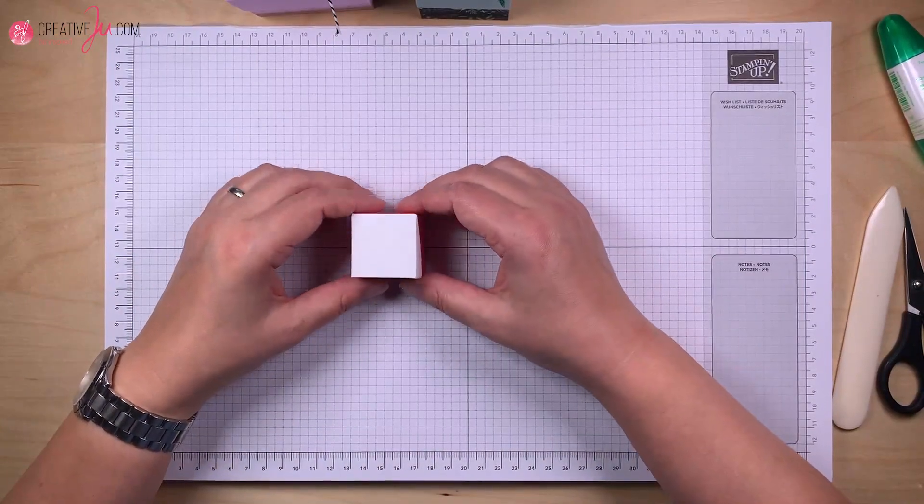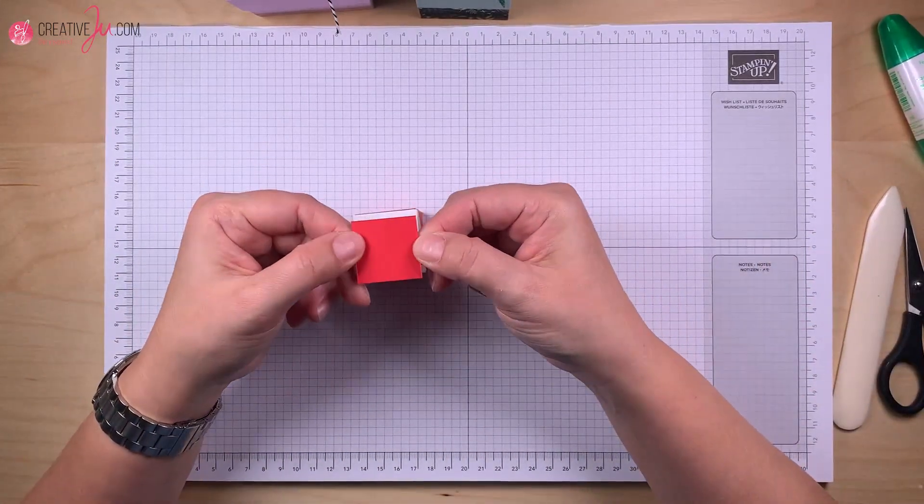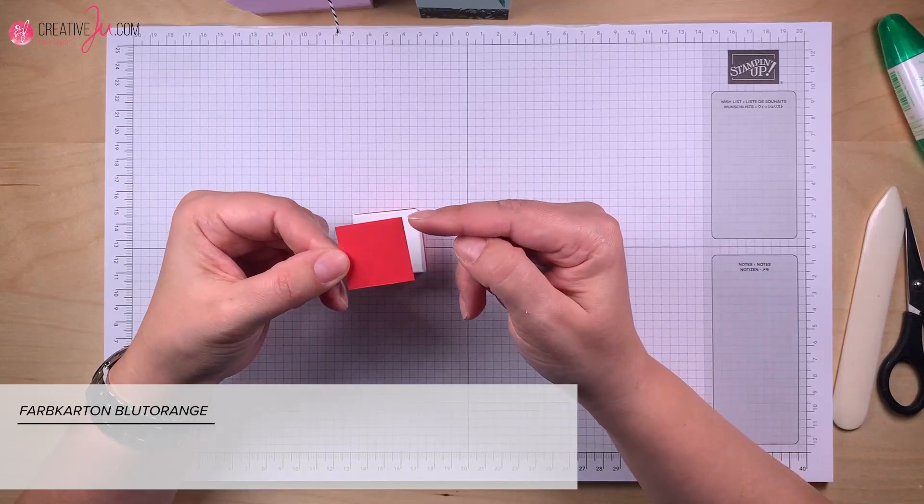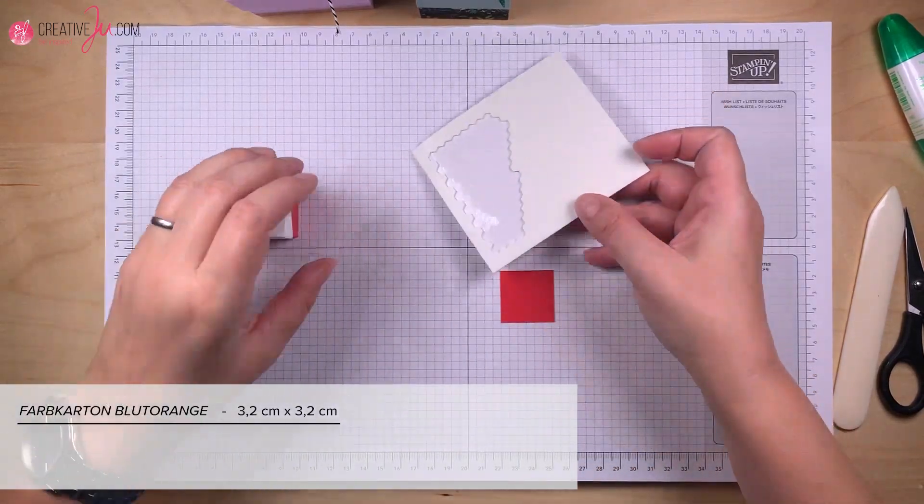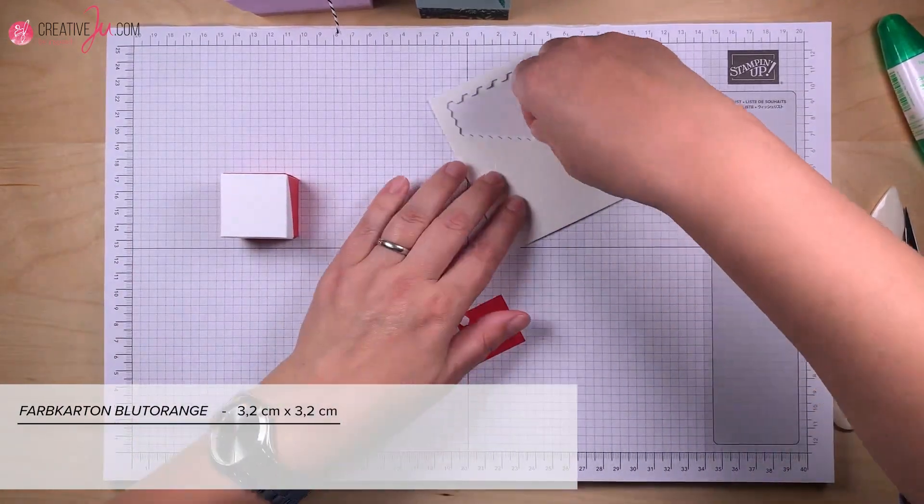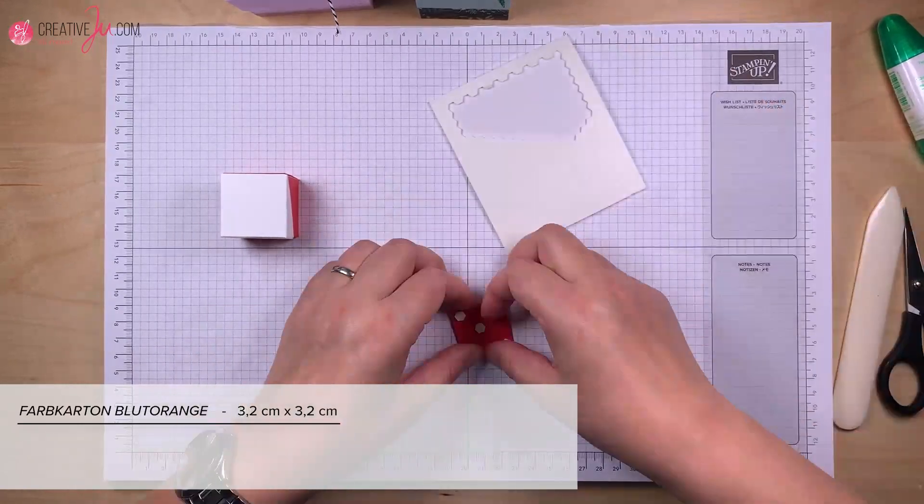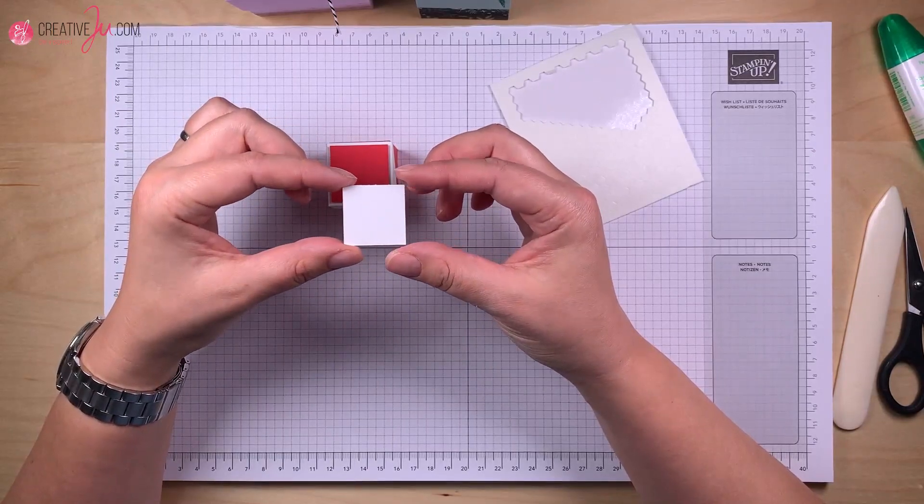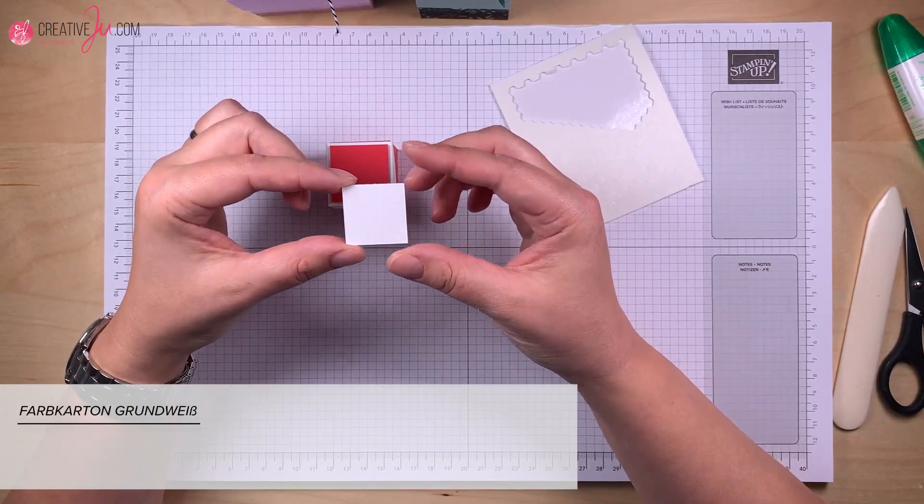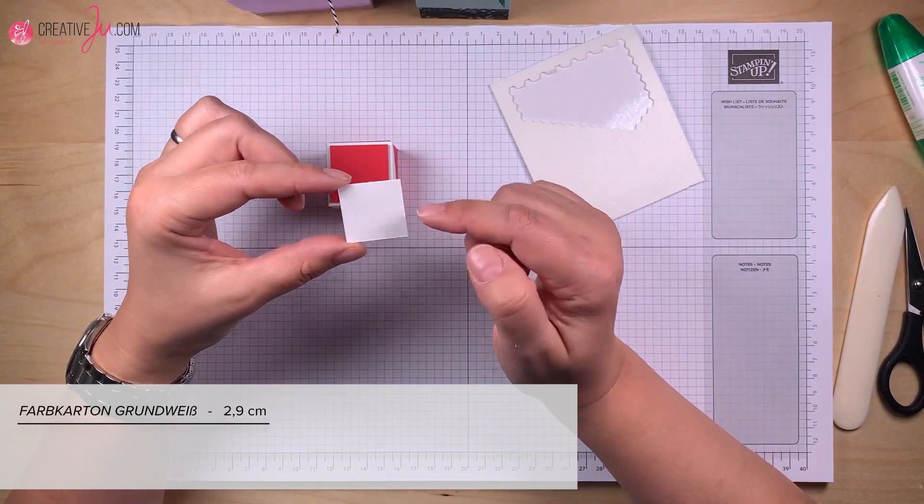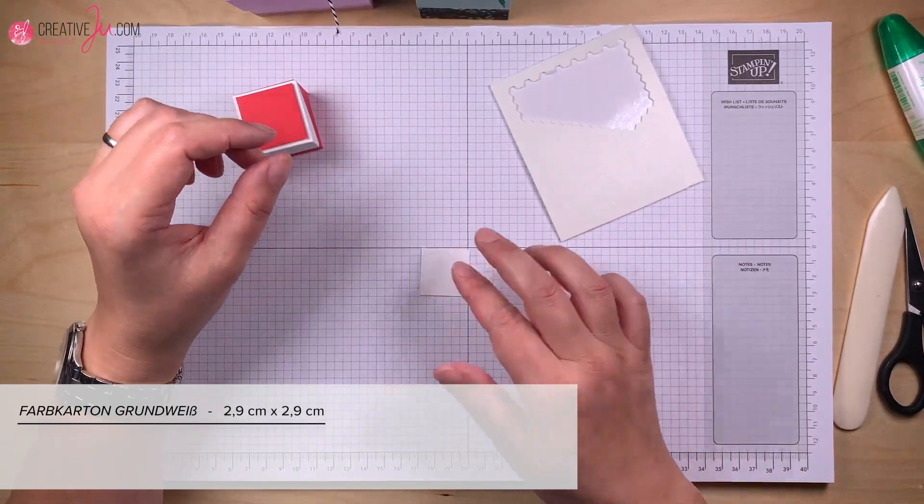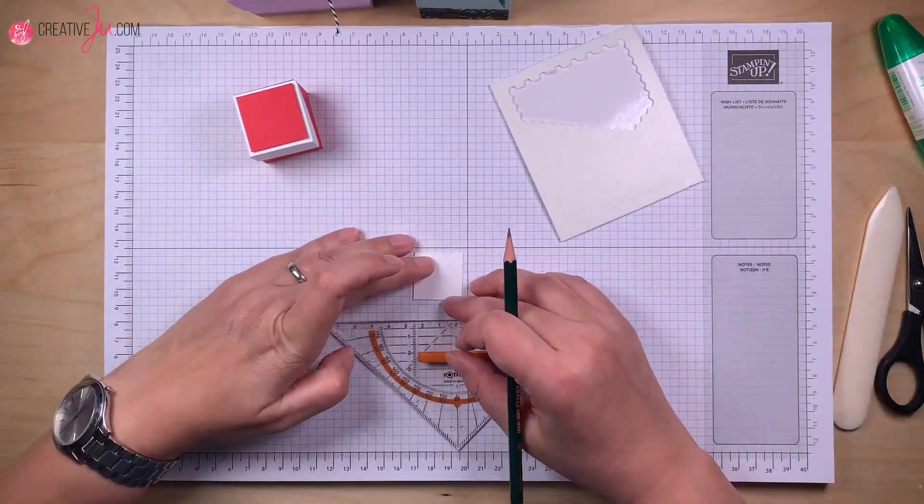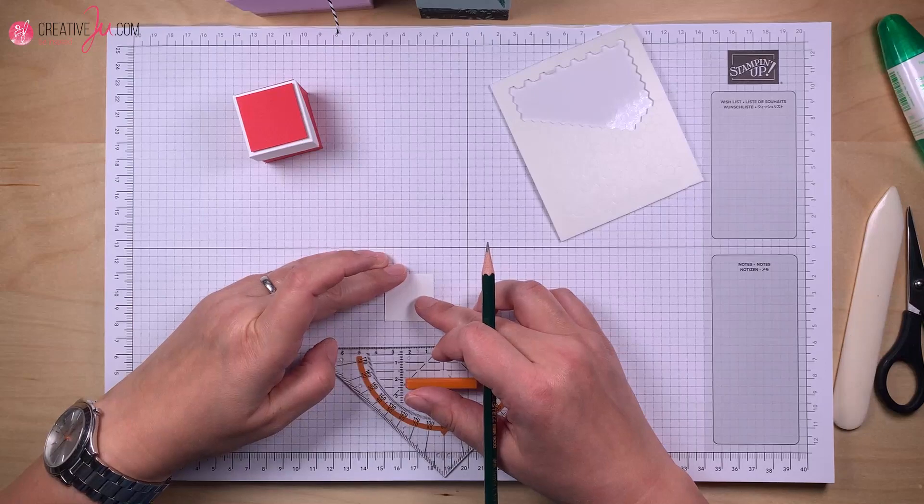Dann kommen wir jetzt zu unserer Deko. Dafür brauchen wir ein Stück Farbkarton in Blutorange wieder und zwar mit dem Maß 3,2 x 3,2. Das können wir aber auch schon ankleben und zwar mit der Menschenloß, das ist dann einfach schöner. Für die Deko brauchen wir noch eine zusätzliche Mattung hier mit dem Farbkarton in Grundweiß mit dem Maß 2,9 x 2,9 cm. Wir kleben das noch nicht an, da kommt jetzt unser Kölner Herzschlag. Und zwar mache ich das jetzt mit dem Bleistift, zeichne ich vor und dann gehe ich mit dem Marker drüber.